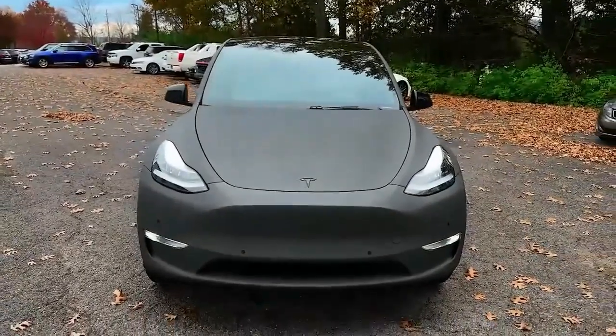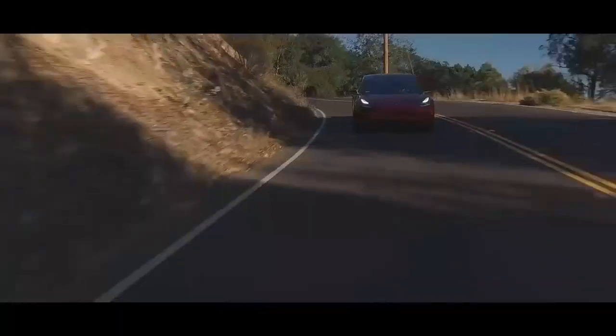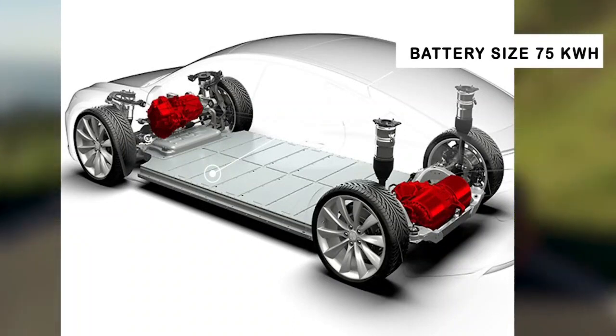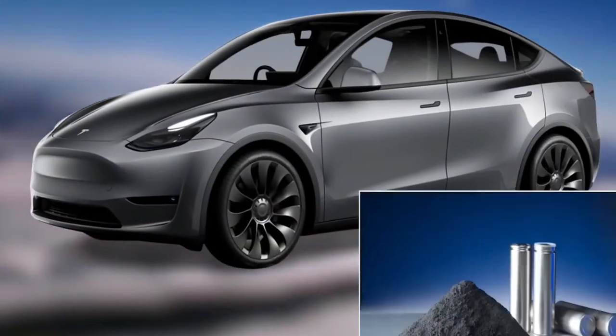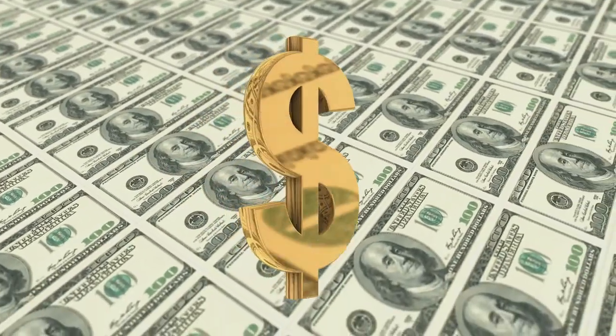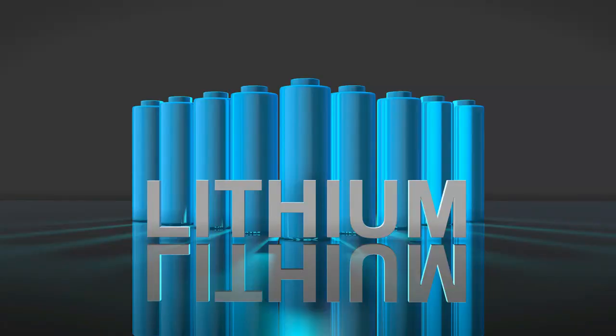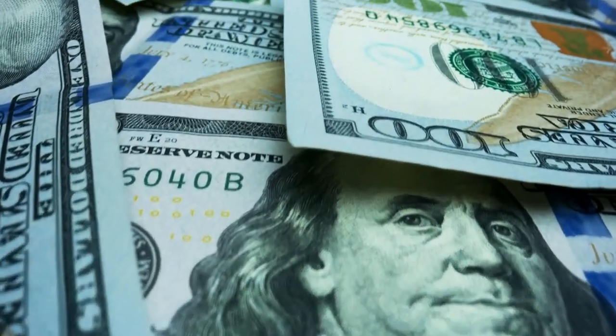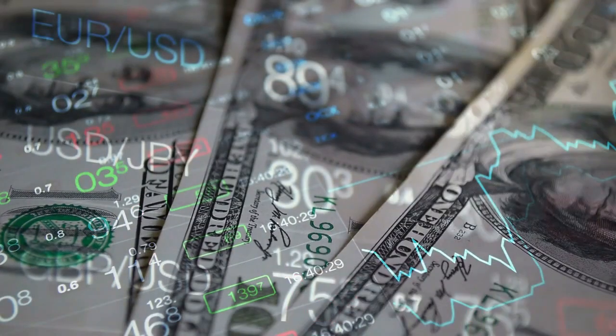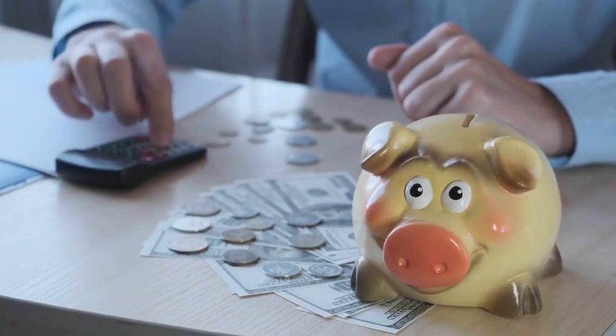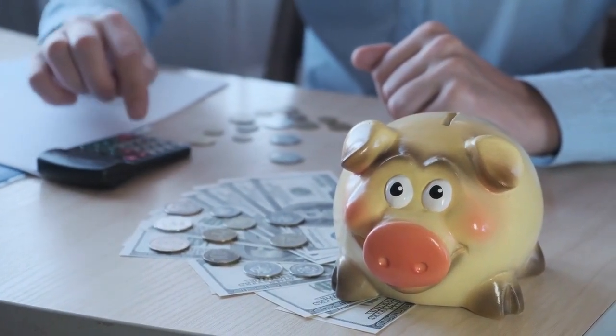To put it into perspective, let's consider the Tesla Model Y for 2023, which boasts a battery size of 75 kilowatt-hours. If this vehicle were equipped with silicon-anode batteries, the cost would amount to a mere $7,500. In stark contrast, using lithium batteries would require shelling out a hefty $10,050. This astonishing price difference of $2,550 highlights the immense savings that can be achieved.